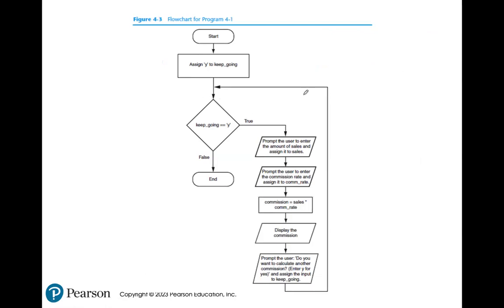Here's an example: we start by assigning 'Y' to a variable called keep_going. Our condition is: as long as keep_going equals 'Y', we perform all the operations - prompt the user to enter sales amount, enter commission rate, calculate and display the commission, then ask the user if they want to calculate another commission and assign the input back to keep_going. This last step gives us an opportunity to exit the loop. The loop only keeps going while keep_going equals 'Y'; if it equals anything else, the loop stops.